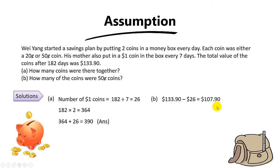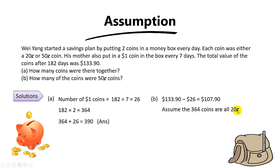This amount of $107.90 will consist of only 20 cents and 50 cents, because we've already removed all the one-dollar coins. The question asks for the number of 50 cent coins, so to find them, let's assume the other way — assume the 364 coins are all 20 cents. We use 364 and not 390 because we've already subtracted the 26 one-dollar coins, leaving us with 364 coins.